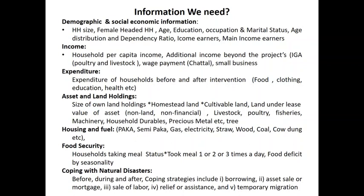Expenditure data was also collected before and after the intervention. Asset and land holding information was gathered including size of own land, homestead land, cultivated land, land under lease, land value, livestock, fisheries, household durable goods, and trees. Housing condition data captured whether the house is fully furnished, paka or semi-paka, and what types of fuel are used for cooking — such as gas, electricity, straw, wood, oil, or cow dung.